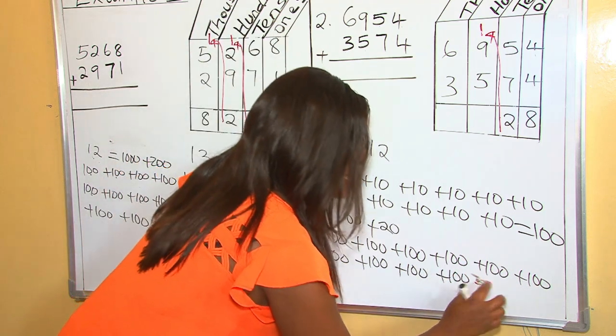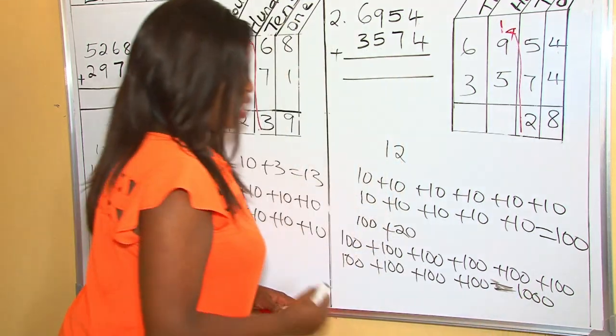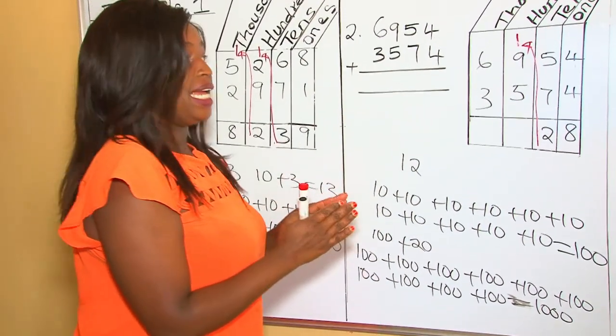we get 1000. So when we put together these 10 hundreds, we get 1000. Therefore,